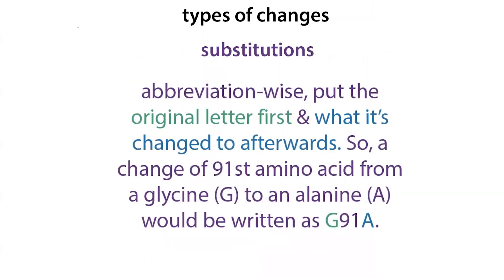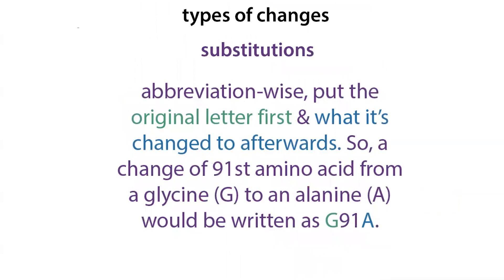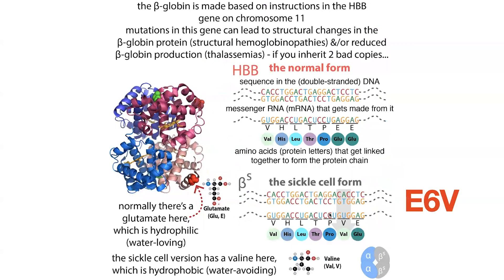More specifically, this is caused by a mutation called E6V. Sickle cell disease and related beta thalassemias can be caused by other changes in hemoglobin genes, but in sickle cell anemia specifically you have E6V. This notation means the change is at the sixth amino acid, changing a glutamate (abbreviated E) into a valine (abbreviated V). The basic substitution notation puts the original letter first, then the position number, then what it's changed to. You might also see it written as GLU6VAL.